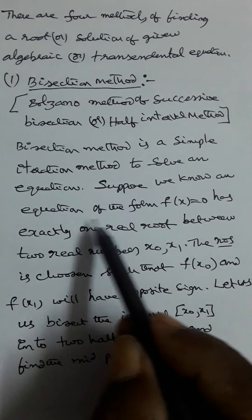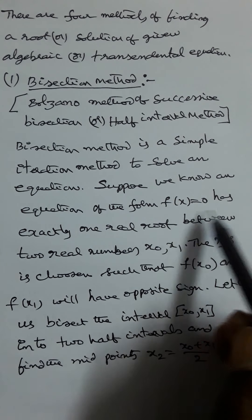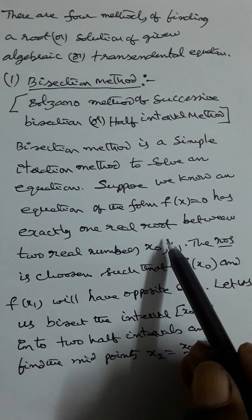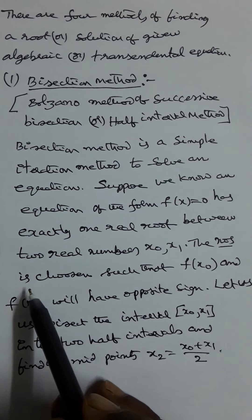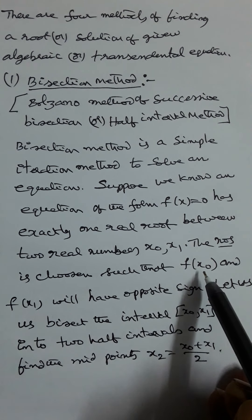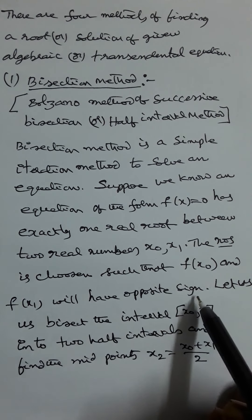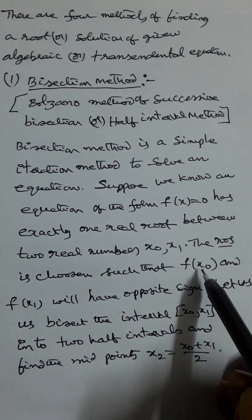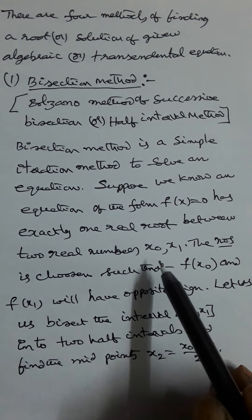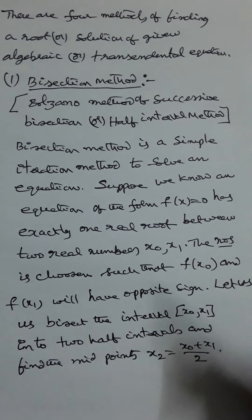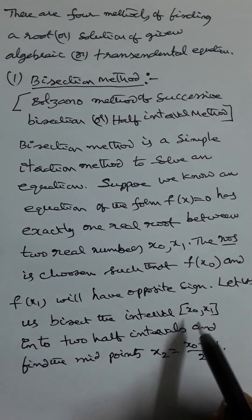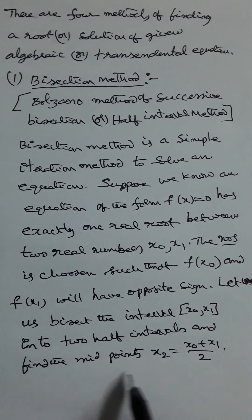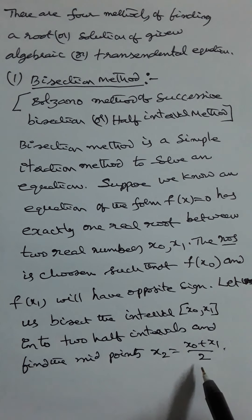Suppose we know an equation f(x) = 0 has exactly one real root between two real numbers x₀ and x₁. We choose these numbers such that f(x₀) and f(x₁) have opposite signs — for example, f(x₀) is negative and f(x₁) is positive. Automatically, a root lies between x₀ and x₁. We bisect the interval [x₀, x₁] into two half intervals and find the midpoint x₂ = (x₀ + x₁) / 2.